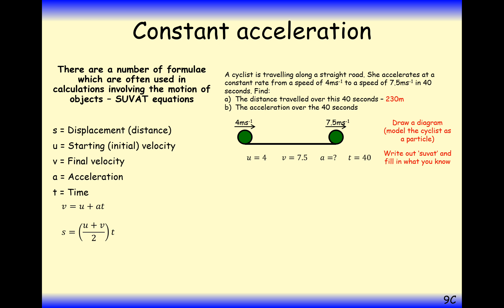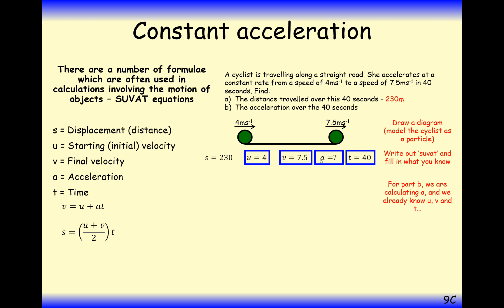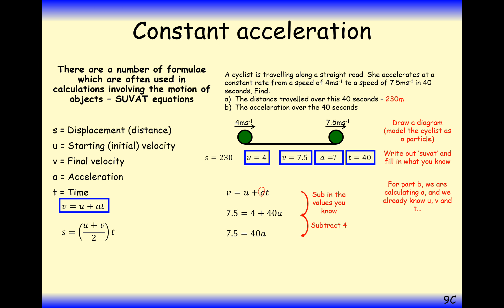Part B is find the acceleration. We replace S with 230 and to find the acceleration we know U, V, and T, so we must be using the first SUVAT formula. Substituting the parts into the formula and we're trying to find A, which is not at the start so we need to rearrange. Subtract 4 to get 3.5, then divide by 40. So that's 3.5 divided by 40, and we get 0.0875 metres per second squared.